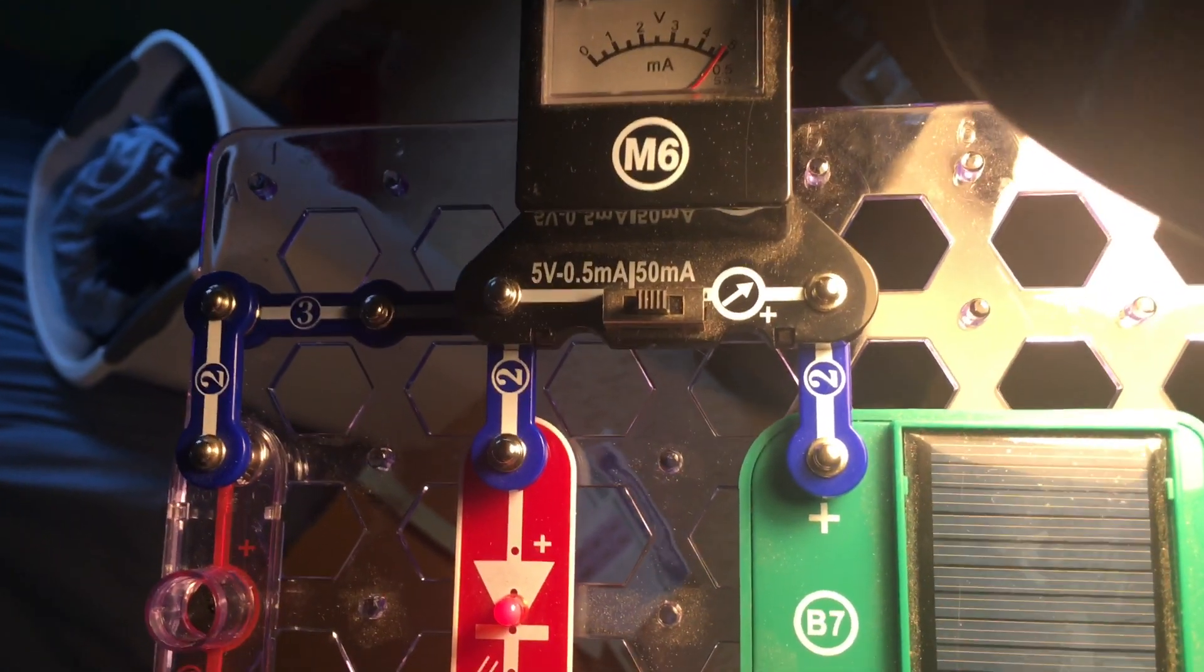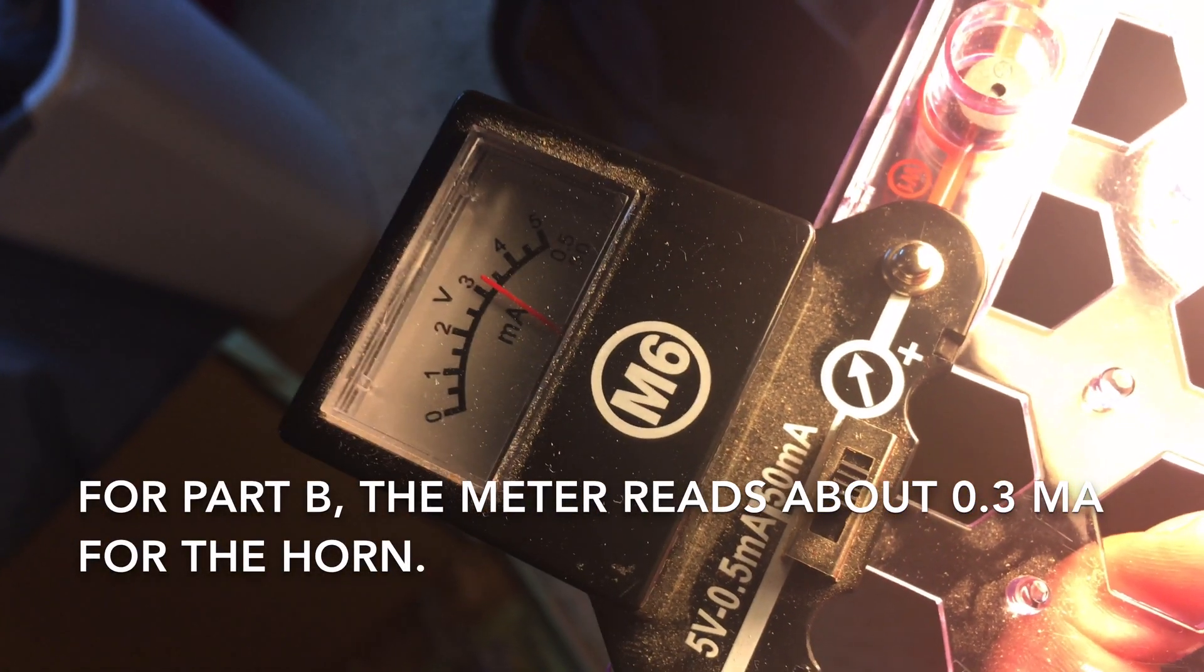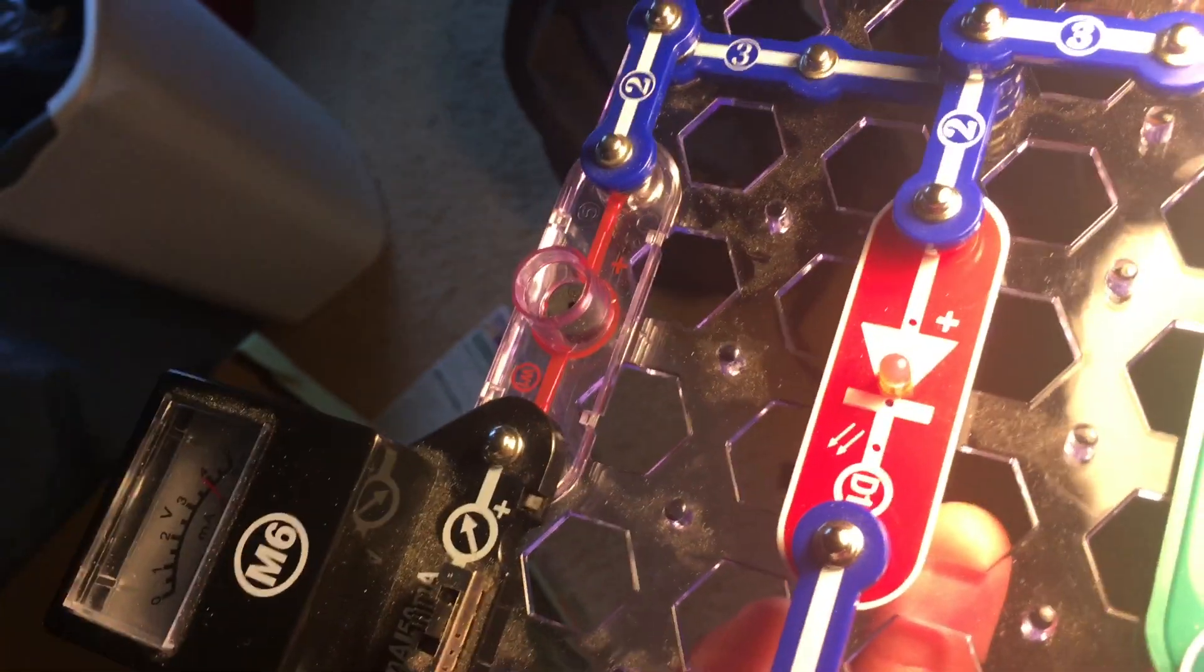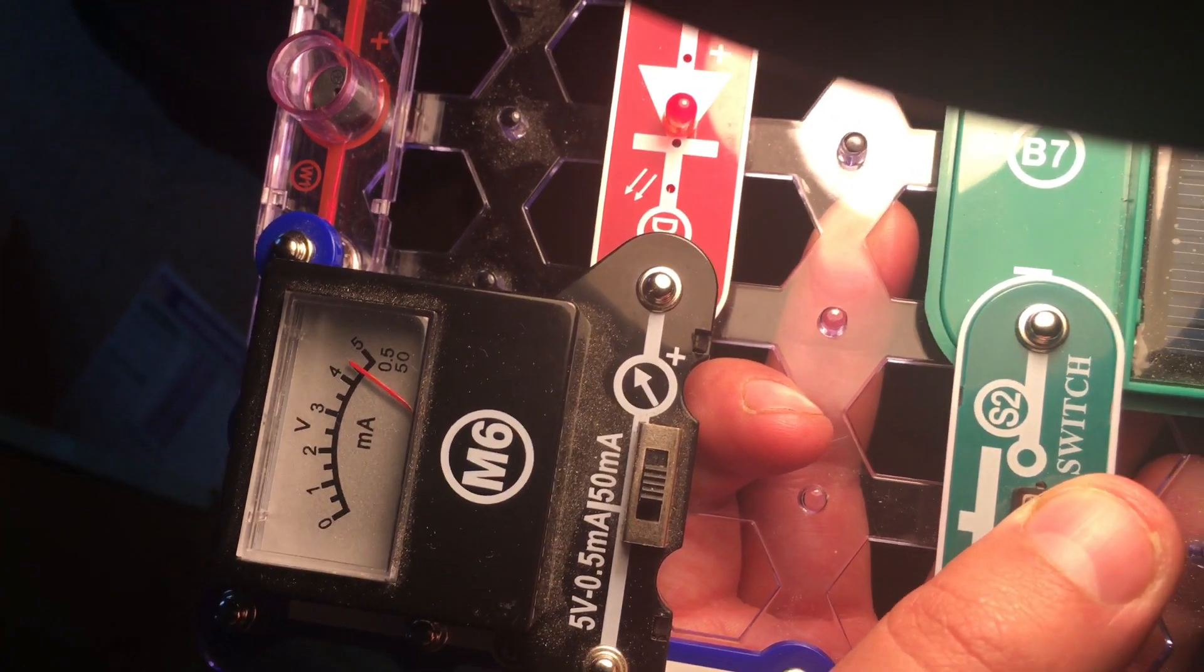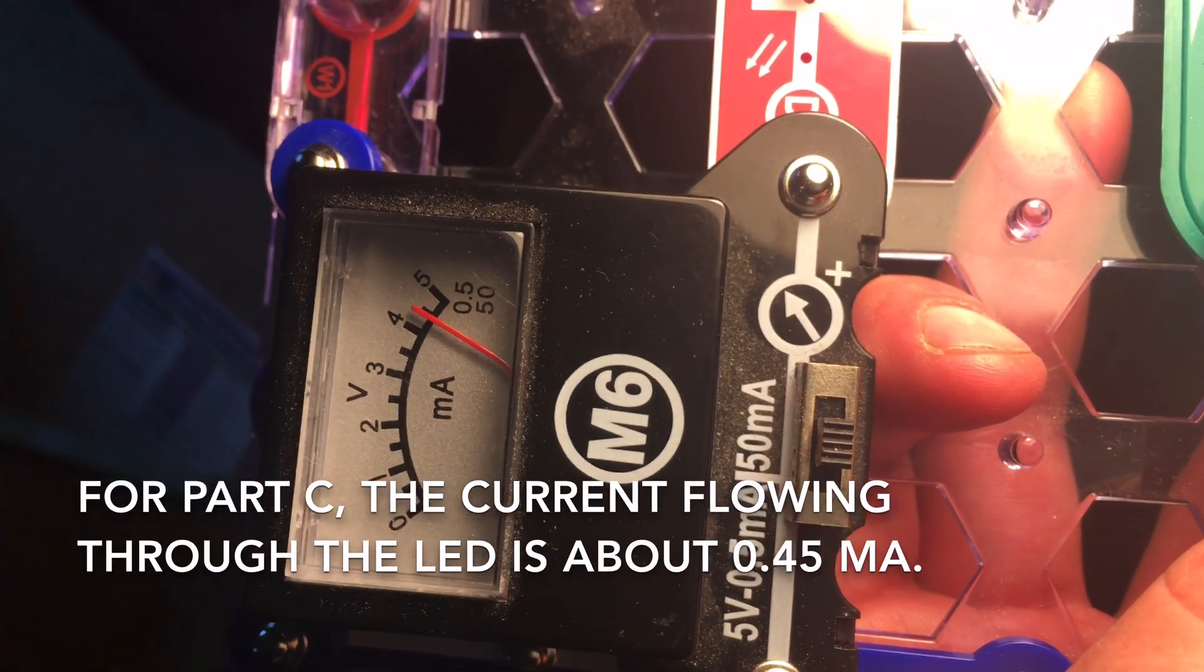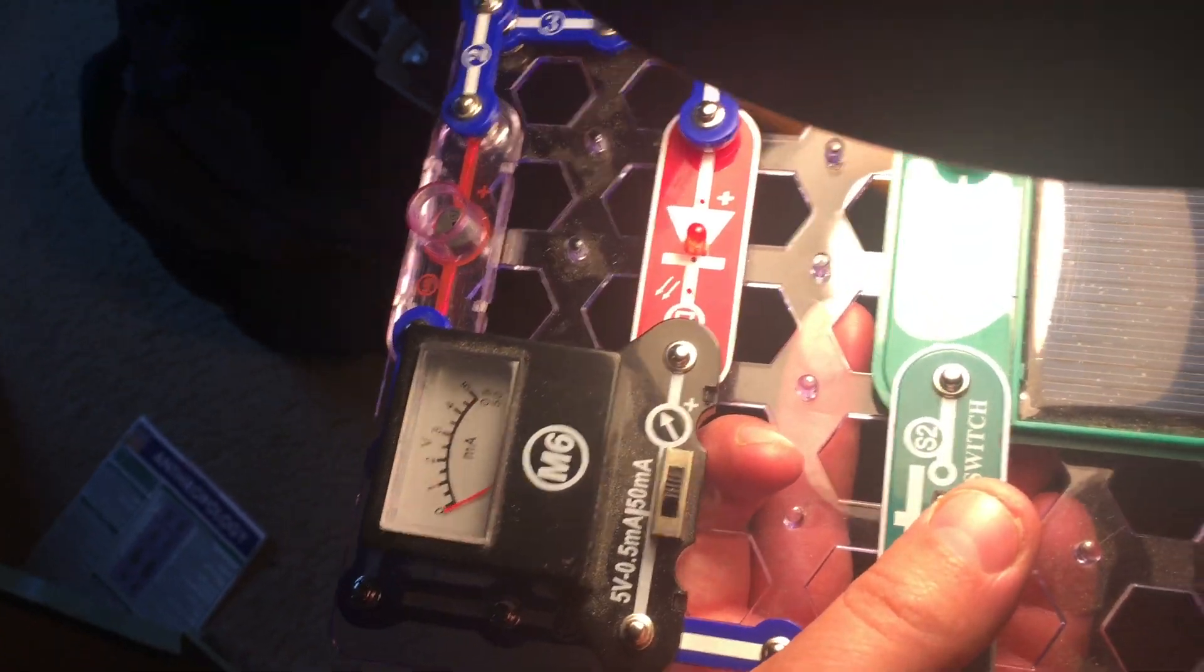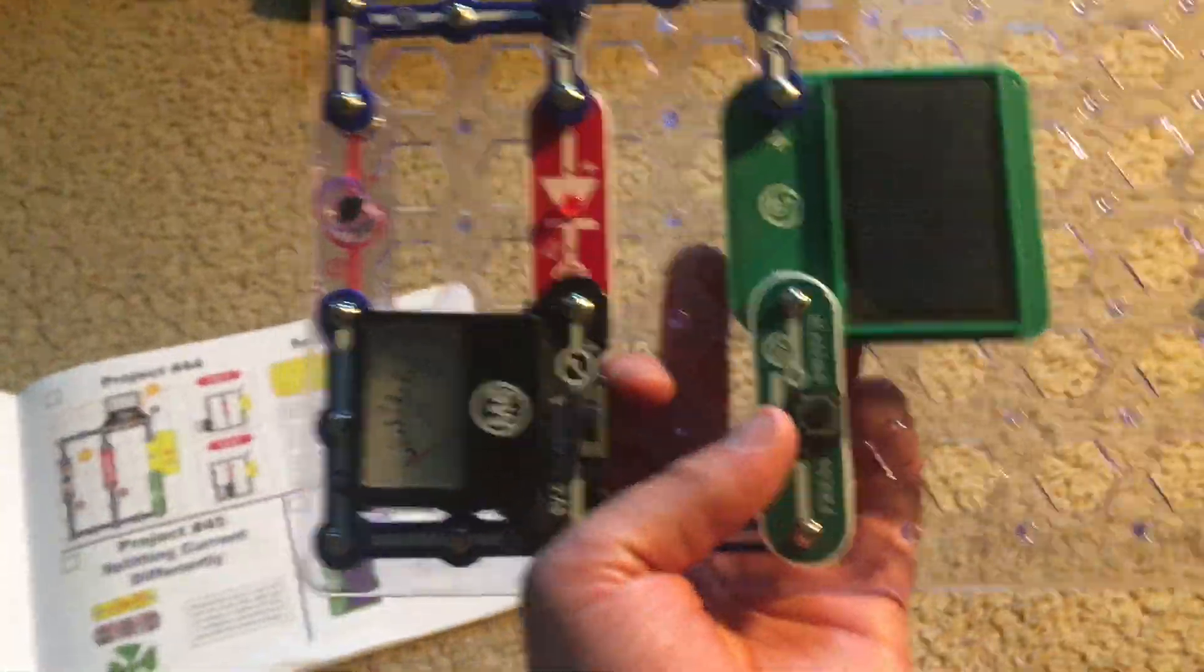Now, for part B, it now reads about 0.3 milliamps. Now for part C, on the 0.5 milliamp setting, it reads close to 0.45 milliamps. And there you have it for the solar cell in this splitting current circuit.